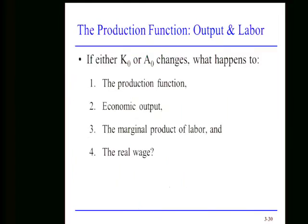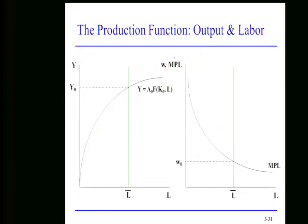There's a lot of symmetry between the production function with output and capital versus output and labor. The asymmetry, of course, is we're all going to be workers, and very few of us are going to be capital equipment. Now, what happens if the capital stock were to change? If the capital stock goes down, then for any given amount of labor, each worker is going to have less capital to work with, so the level of economic output will also go down.